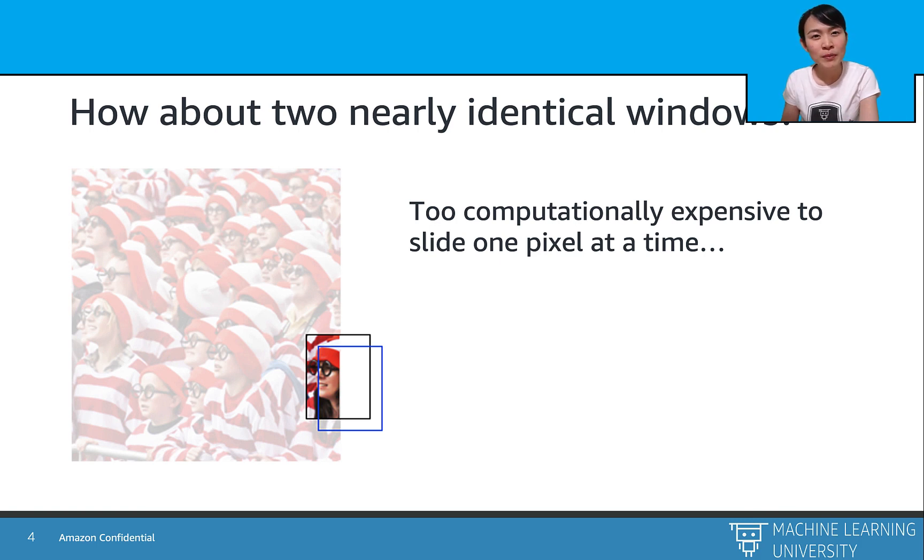the input features will be 90% or even 95% similar to each other, which seems to be too computationally burdensome. Stride can help in this situation.